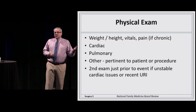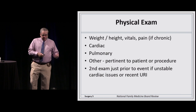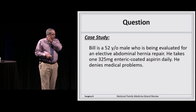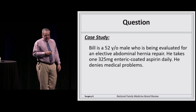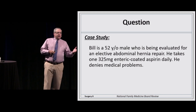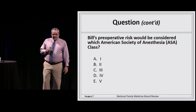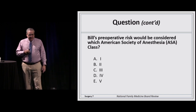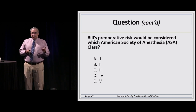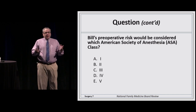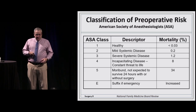Here's a question: a 52-year-old male being evaluated for an elective abdominal hernia repair takes one 325 milligram enteric-coated aspirin daily and doesn't have any medical problems. What is his preoperative risk according to the ASA scale — one, two, three, four, or five? He's actually a class one — a healthy person. We don't state why he takes the aspirin; he's presumably taking it for prophylactic purposes, so we don't know that he has any heart disease or heart conditions.